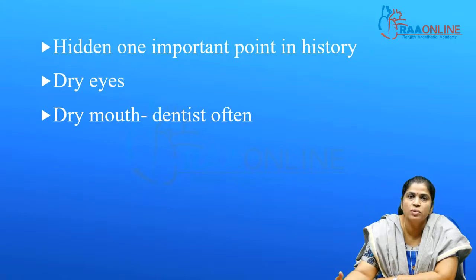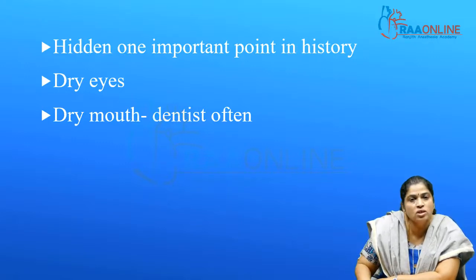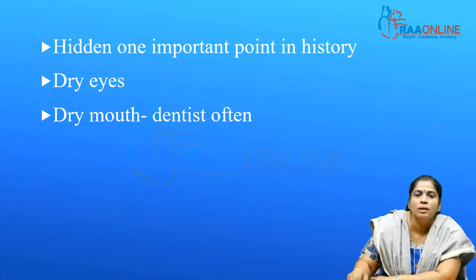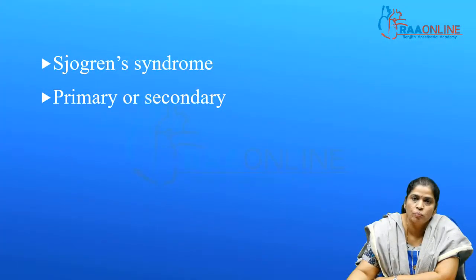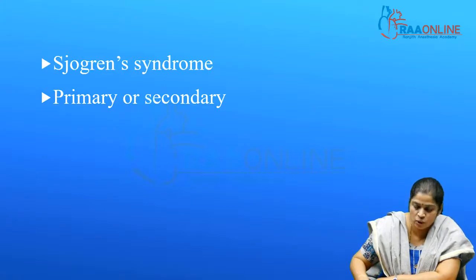She has such dry eyes that she has been using artificial teardrops for quite a while, and she visits the dentist quite often because she gets caries. Does this change your diagnosis? Yes. This lady has Sjögren's syndrome — that could be primary or secondary. Secondary could be due to other arthritic problems like rheumatoid arthritis. But basically, you have to think about Sjögren's syndrome even with joint pains, and you have to ask for a history of dry eyes and dry mouth.